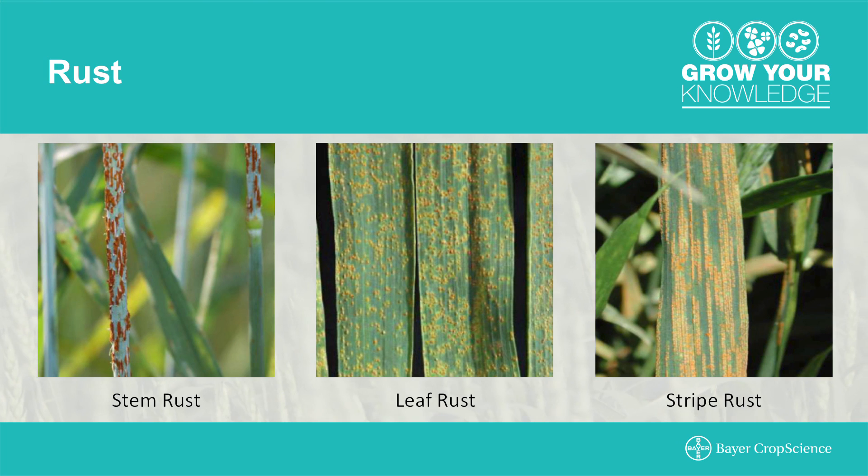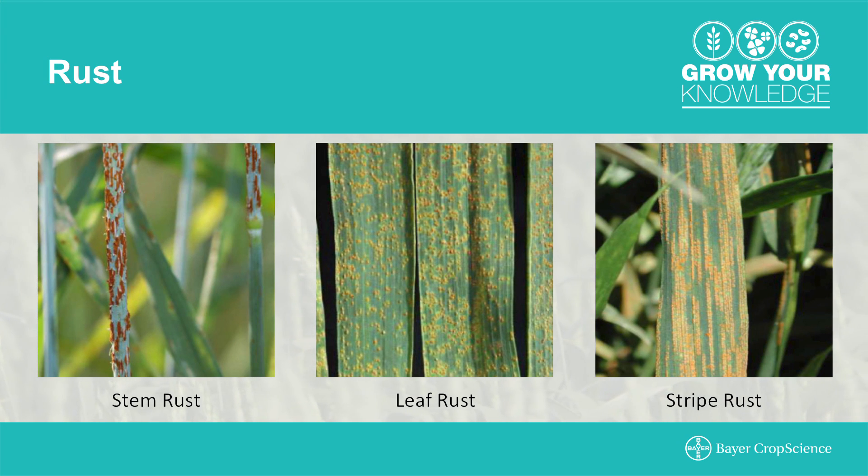Rusts are unique in that they require an alternate host to complete the sexual stage of their life cycle. In Western Canada, these alternate hosts are non-existent for the most part, so we rely on the asexual stage of reproduction for any spore production with our rusts.